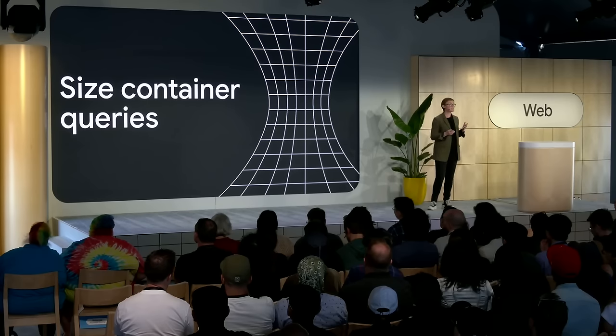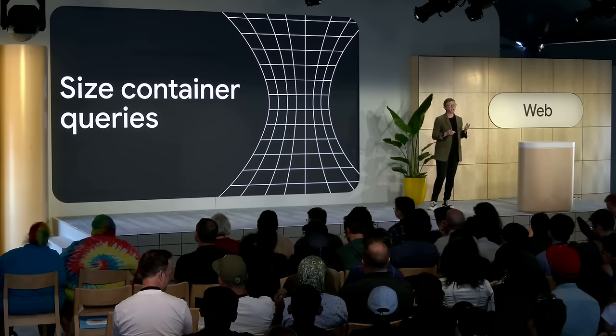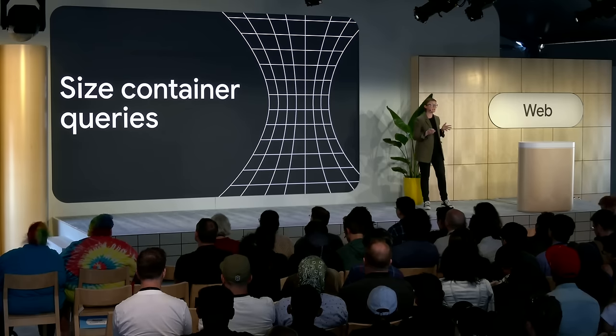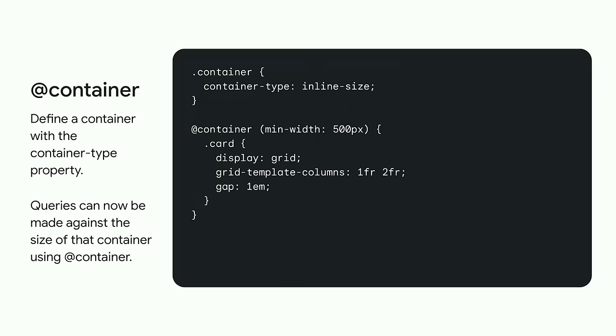First up, we've got size container queries. They let you change your design based on the width or inline size of a container, rather than only targeting the size of the viewport as you can with media queries. They enable more reusable components that can modify themselves based on the available space when they're placed into a layout. Container queries behave much the same way as media queries, but because they're querying a container rather than the viewport size, you first need to define the element that is the container using the container-type property with a value of inline-size.